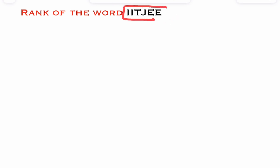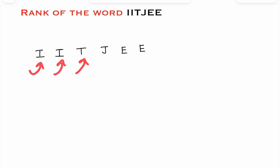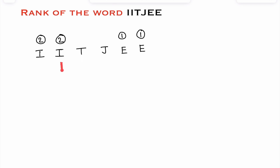In this case, how will we find the rank of the word with the help of a shortcut? First, write all the letters of the word IITJE and give numbers to these letters as per alphabetical order. E comes first alphabetically, so give number 1 to both E's. For I, give number 2 to both I's. J gets number 3, and T gets number 4.